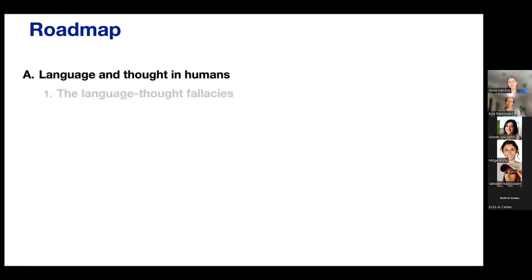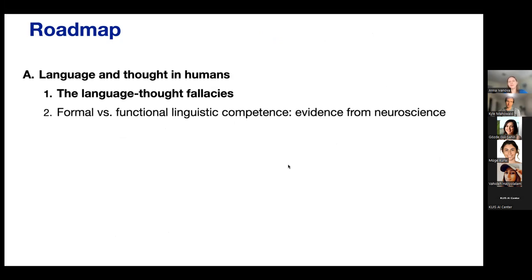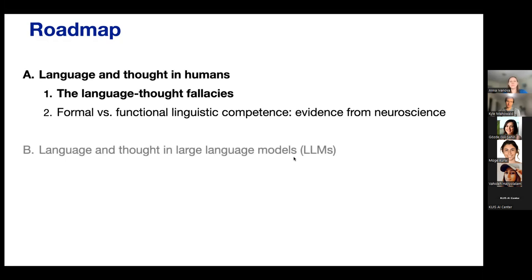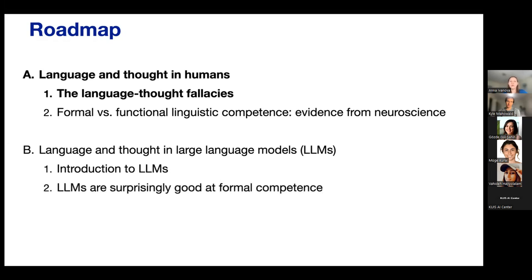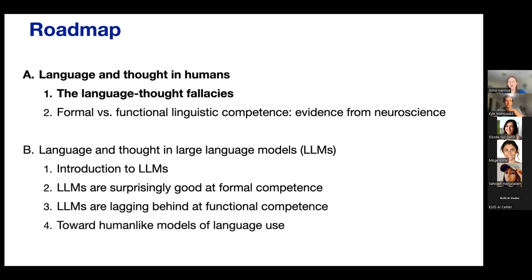We've told you about the fallacies of conflating language and thought. Now we'll explain why we think it's really important to separate the two. Specifically, the way we separate them is we divide the capacities that we have into formal linguistic competence and functional linguistic competence. We ground this distinction in neuroscience, and then we're going to apply it to large language models. We'll briefly introduce LLMs, show that these models are surprisingly good at formal competence, but still lag behind at many aspects of functional competence, and then discuss implications for building better, more human-like models.